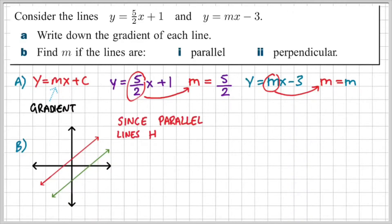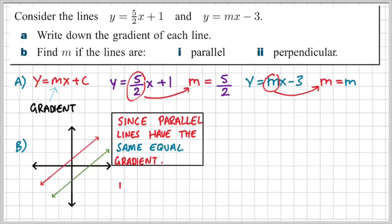So in that case, since parallel lines have the same equal gradient, that would mean that the value of m would be five over two, exactly the same as the original equation, since they're both parallel and they have the same gradient.